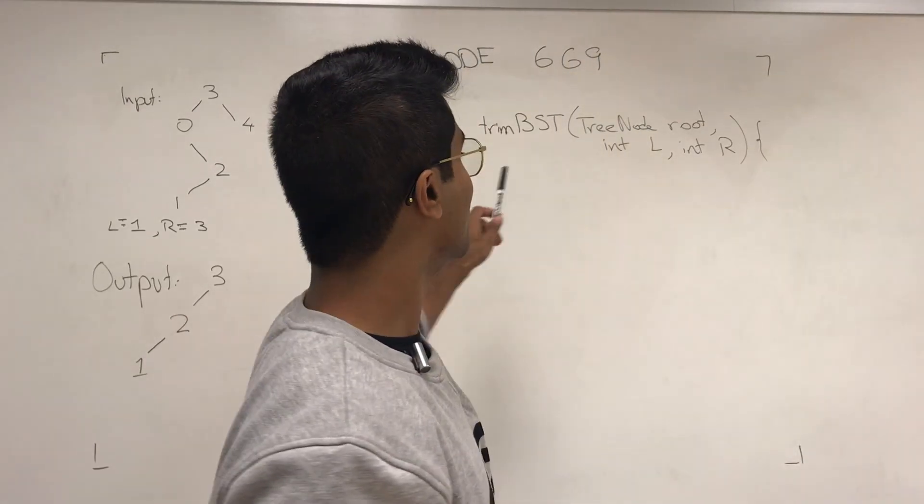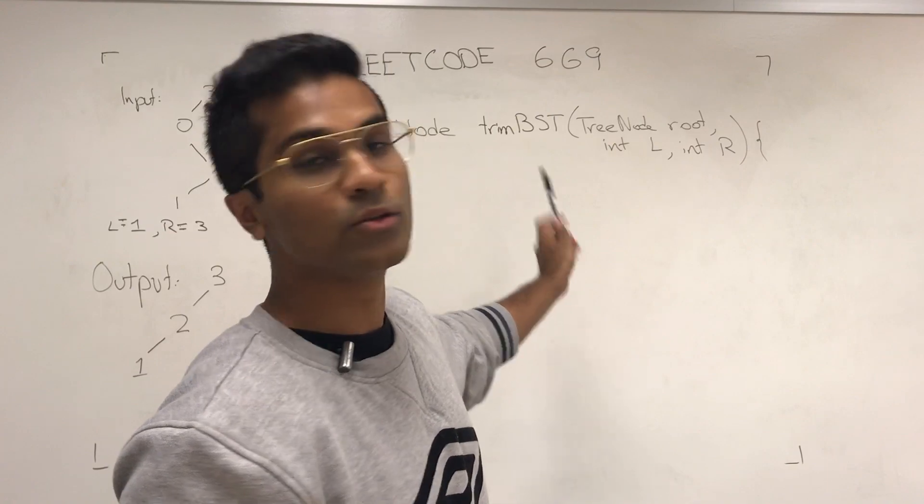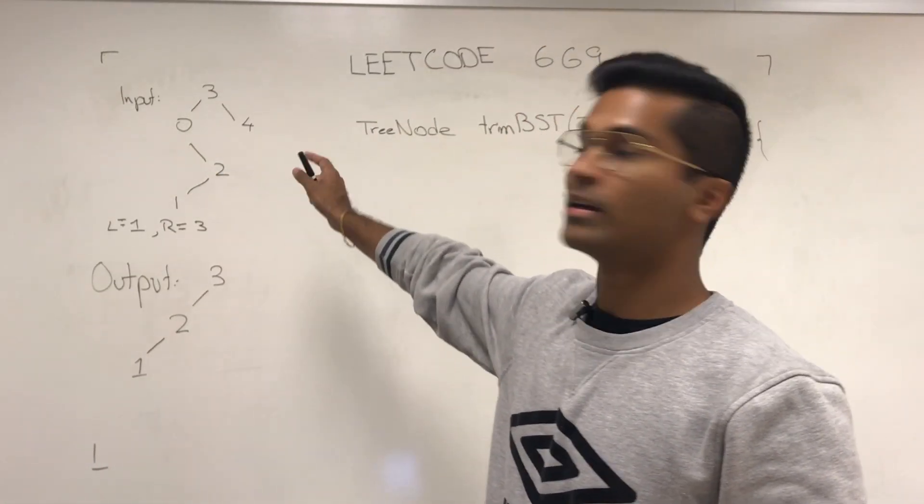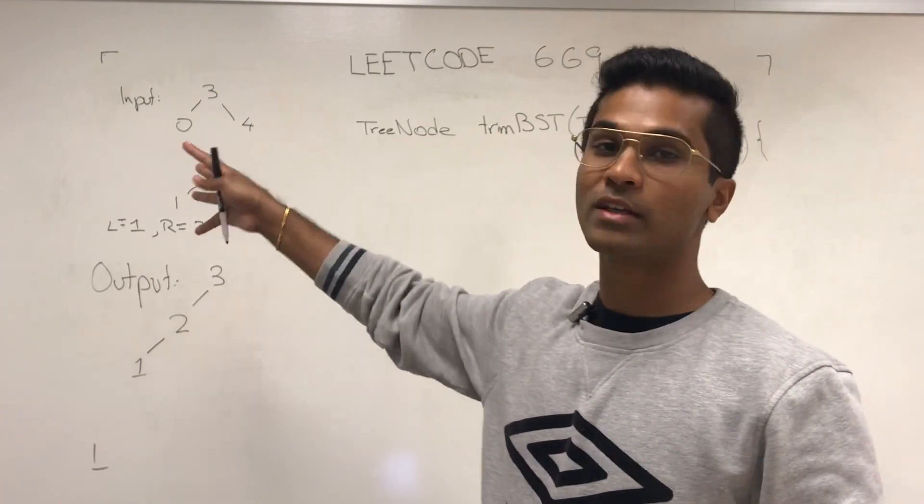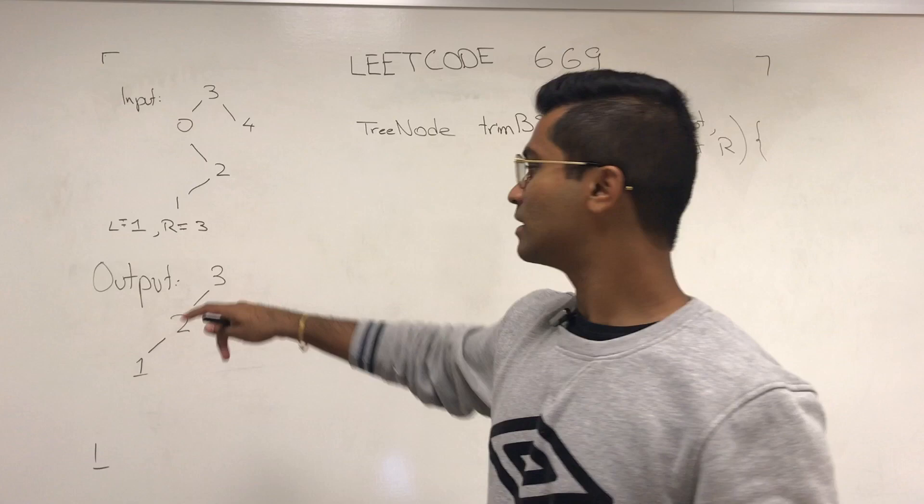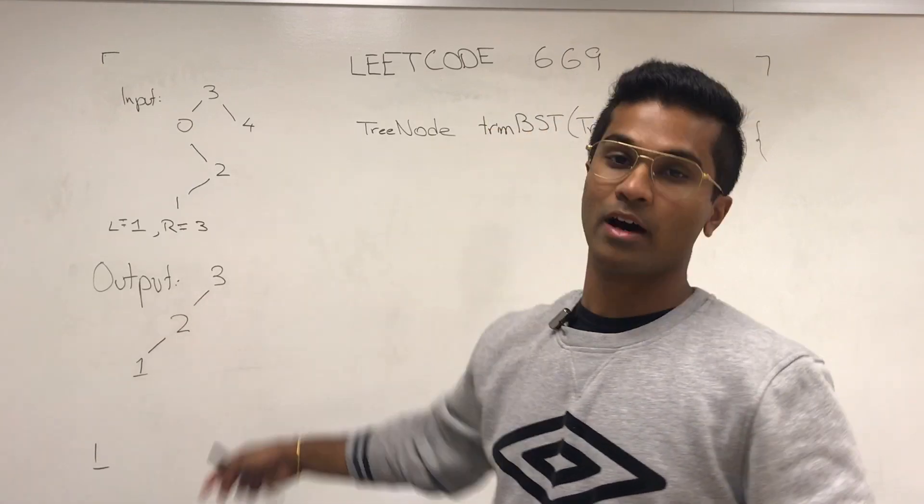So the input is a root node, and there are going to be two limits that are given to us. Basically, they want us to take the binary search tree and remove everything which is not within the limits left and right. So that's the input, that's going to be the output.